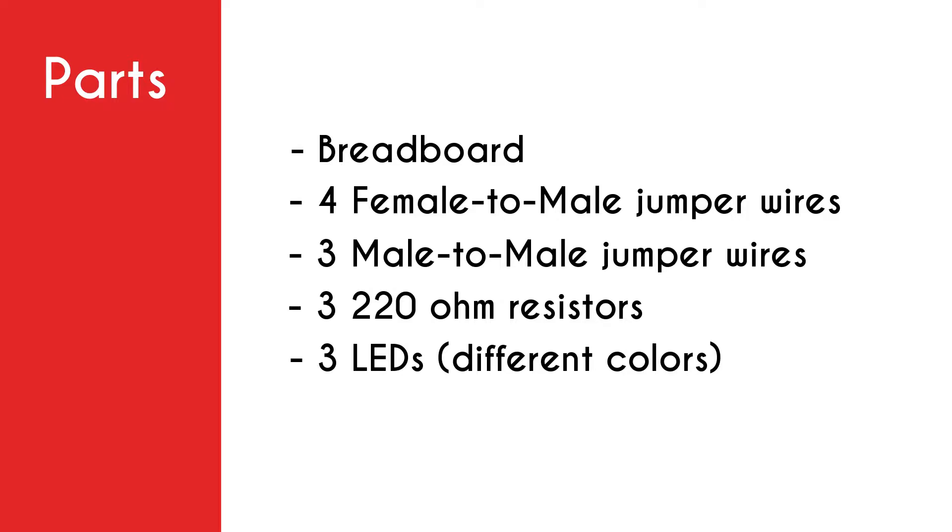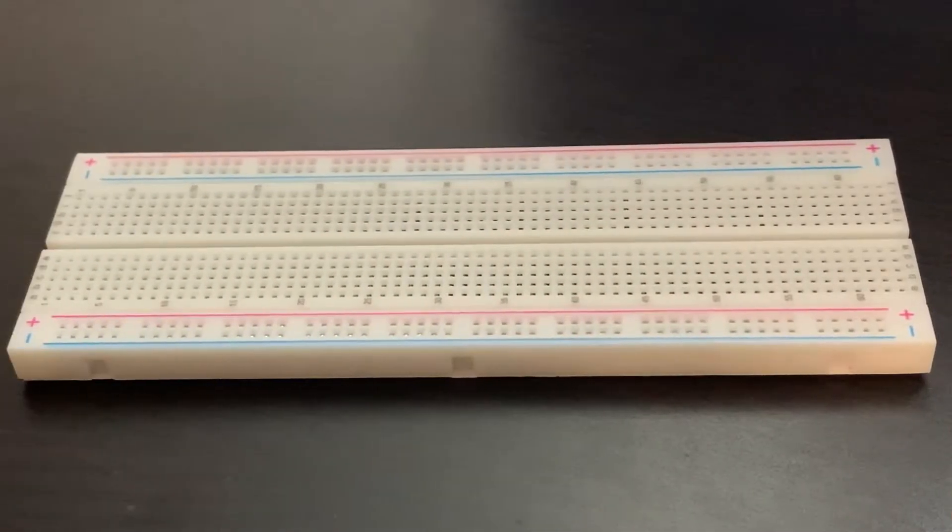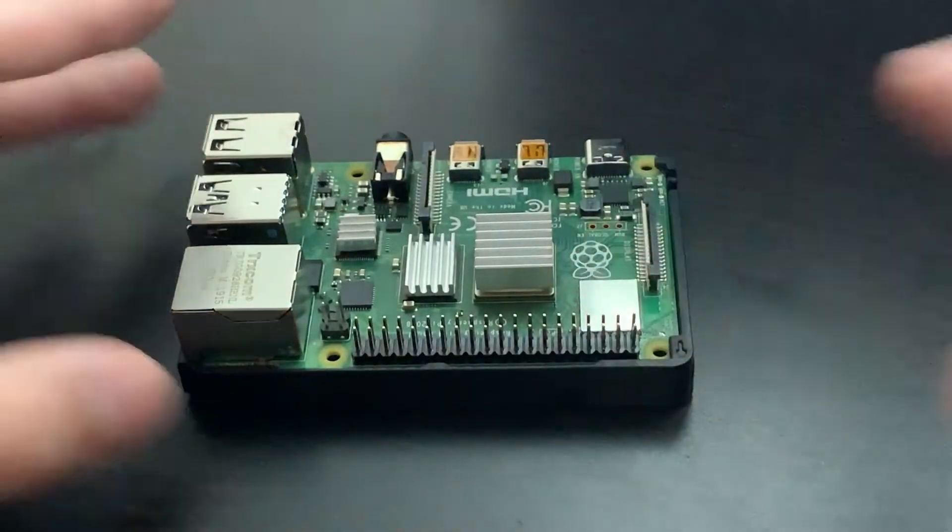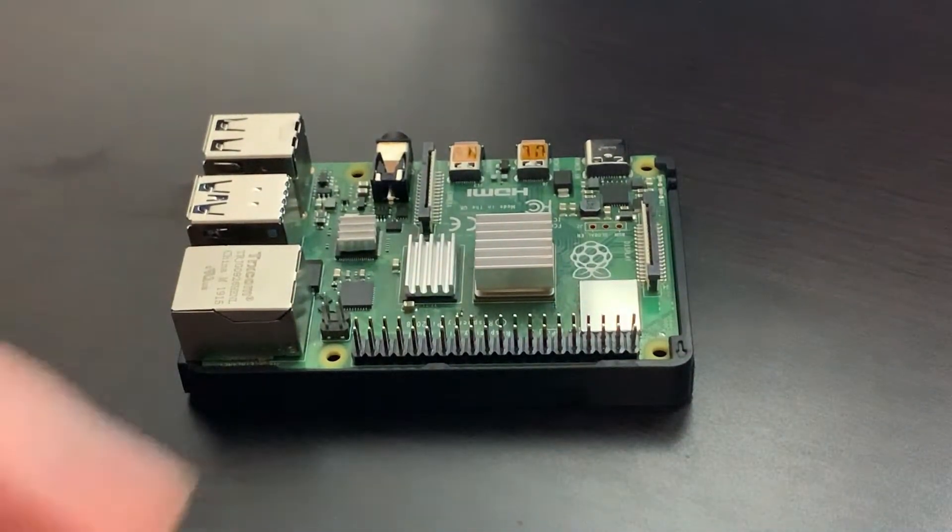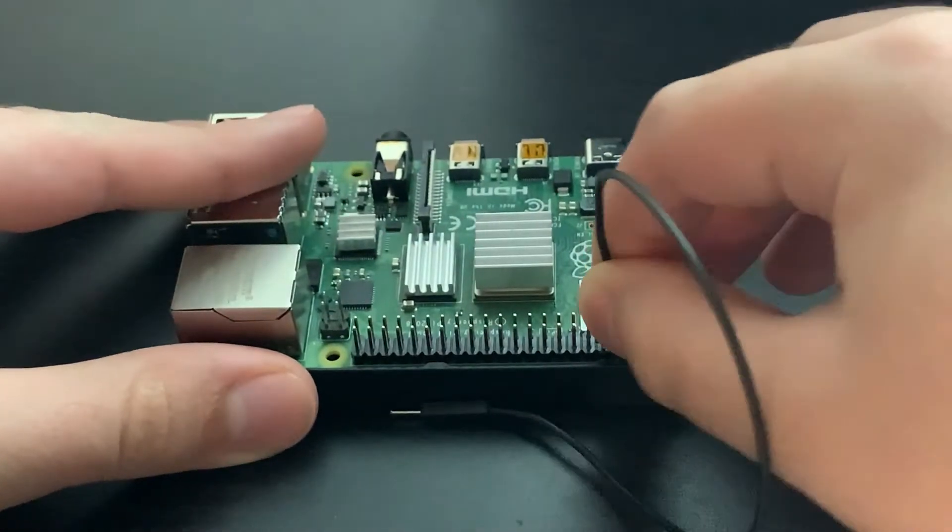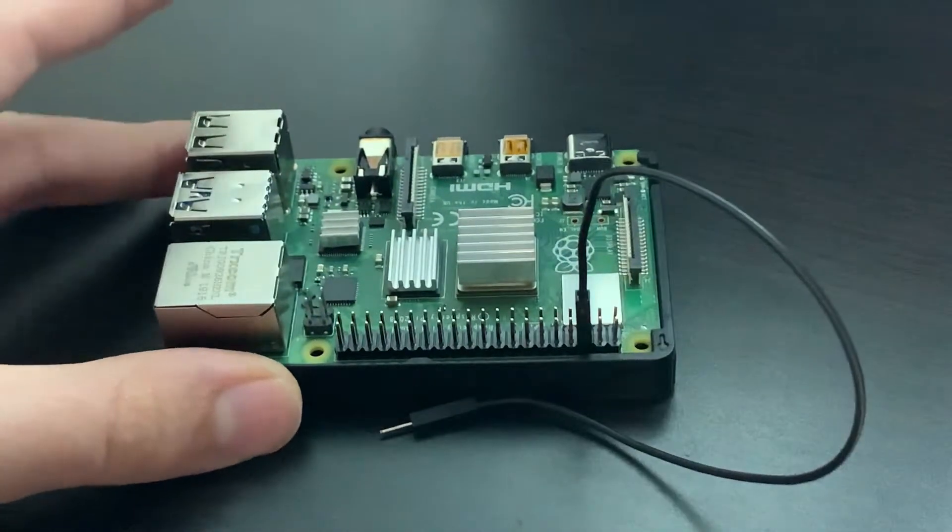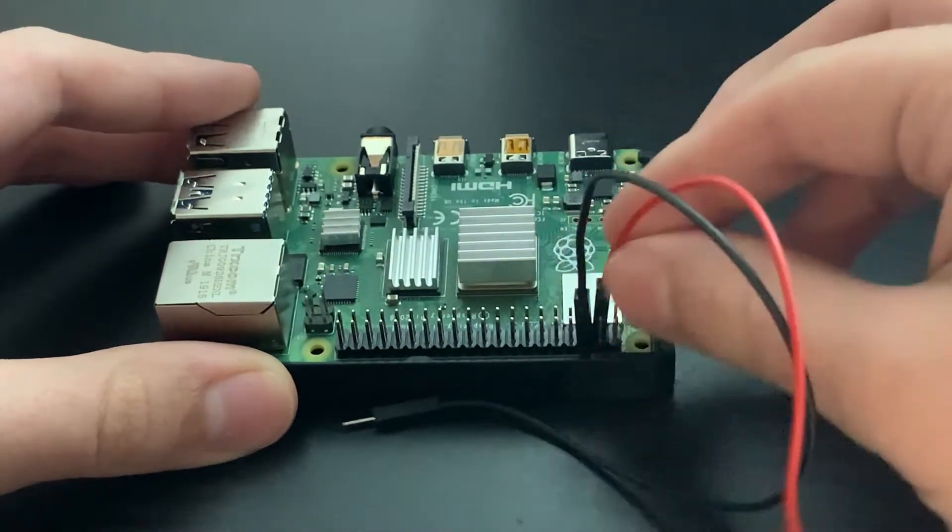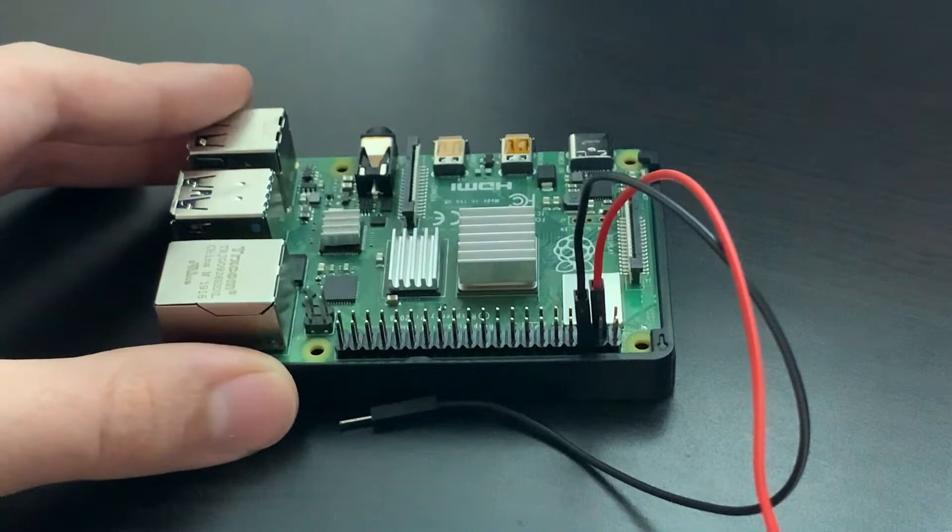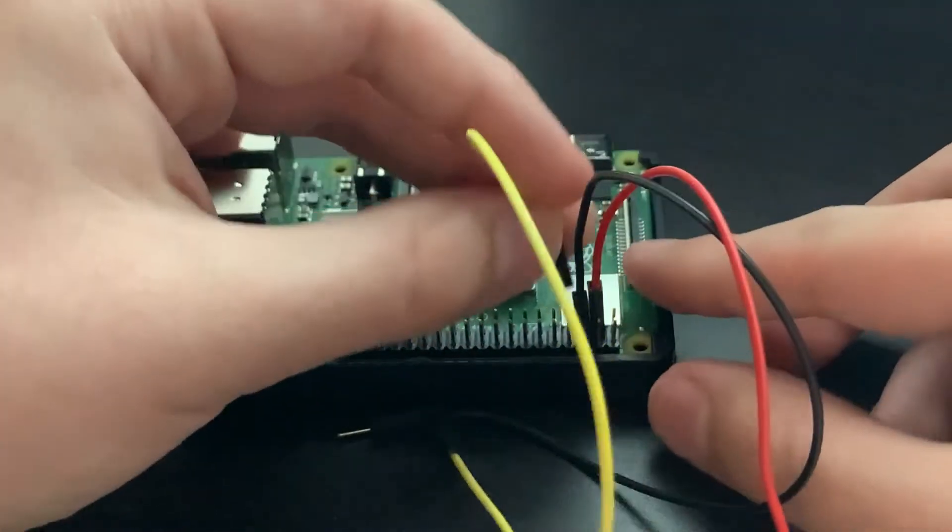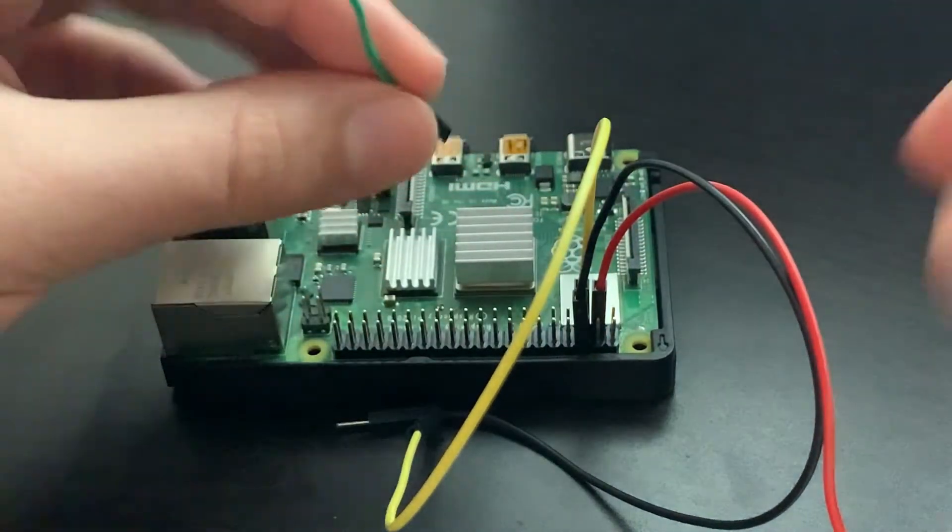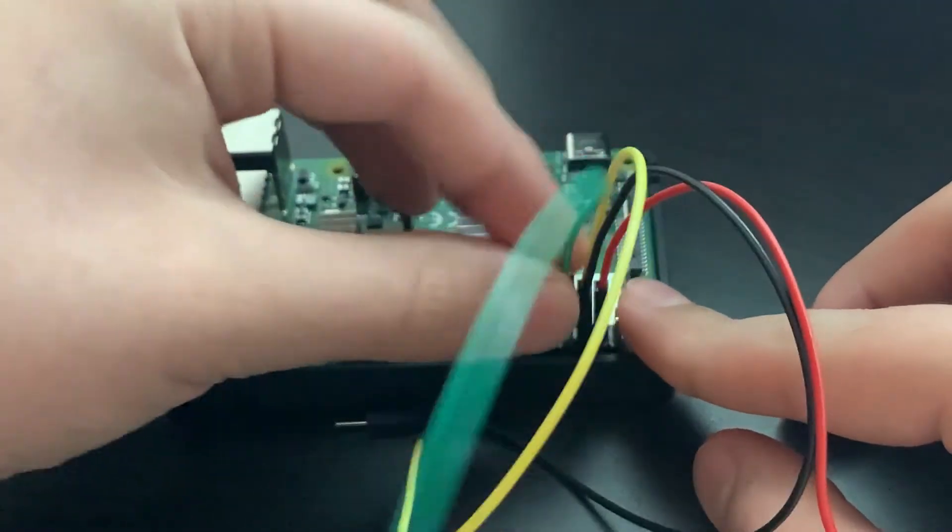Now that we're done going over the parts used, we can get started on how to build this project. First we're gonna take a look at the Raspberry Pi. We're gonna be connecting ground first, third on the bottom ground pin. Then red goes second on the top, that is GPIO 2. Yellow goes third on the top, GPIO 3. Lastly, green goes fourth on the top, GPIO 4.